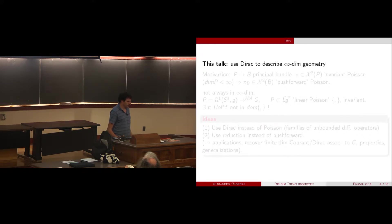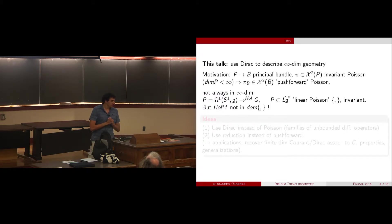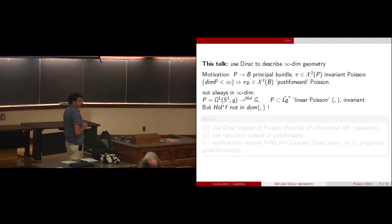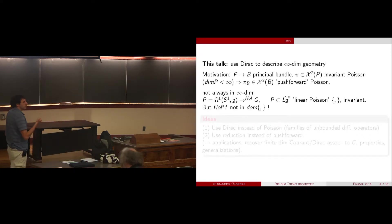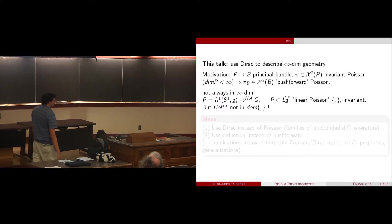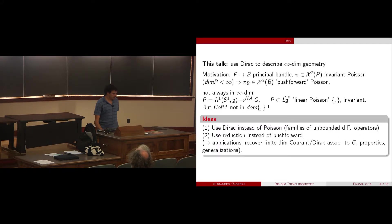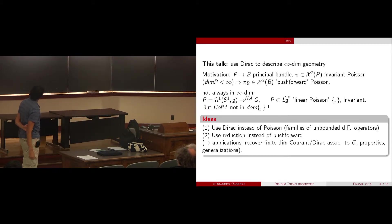The motivation is the following. In finite dimensions, if you have a principal bundle with an invariant Poisson structure, it pushes forward to the base. But in infinite dimensions this might not work. In particular, there is a Kirillov-Kostant type of linear Poisson structure on the dual of a central extension of a loop algebra. Because the central extension involves taking a derivative, not every functional can be bracketed — there is a domain in this bracket — and in particular the basic functions you would like to bracket to induce the bracket on the base are not well defined. The main idea is to use Dirac structures instead of Poisson structures.